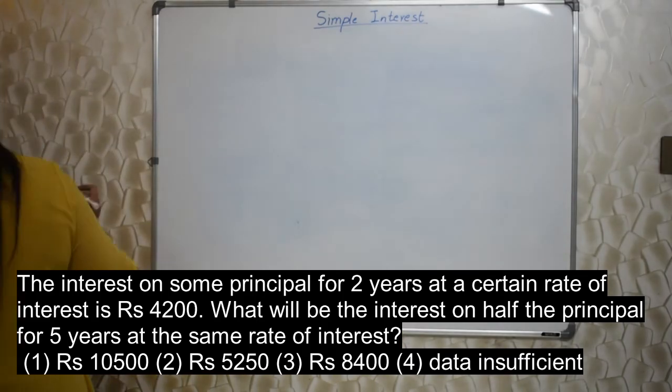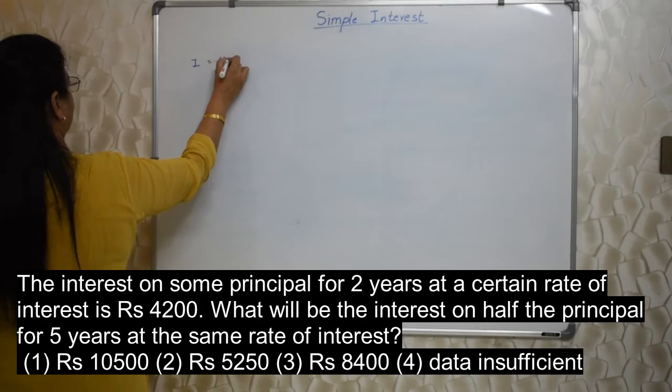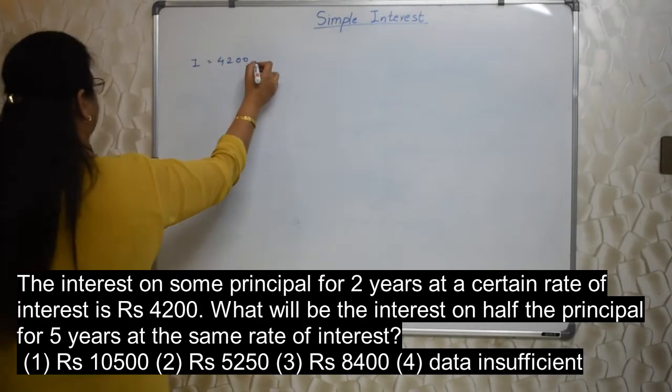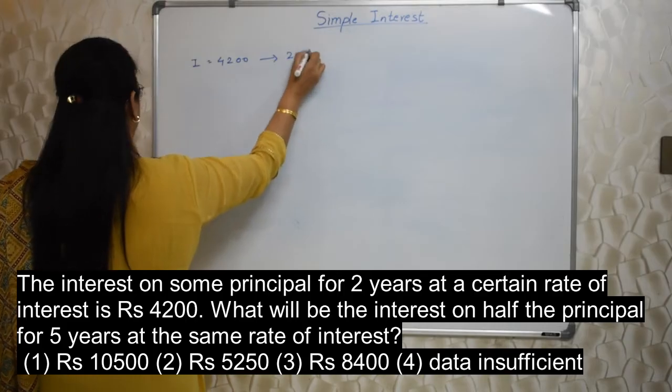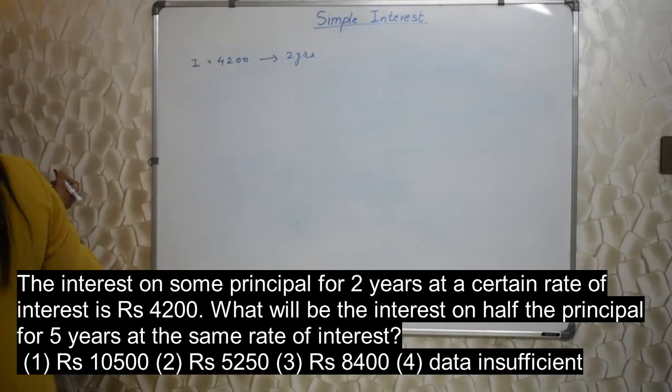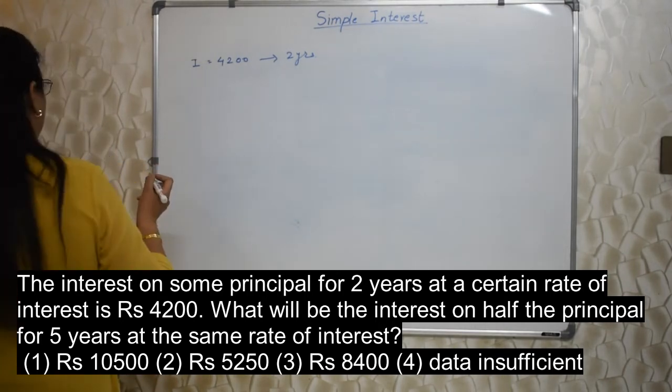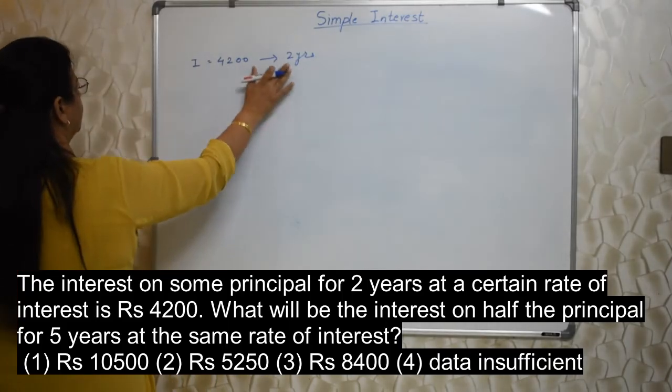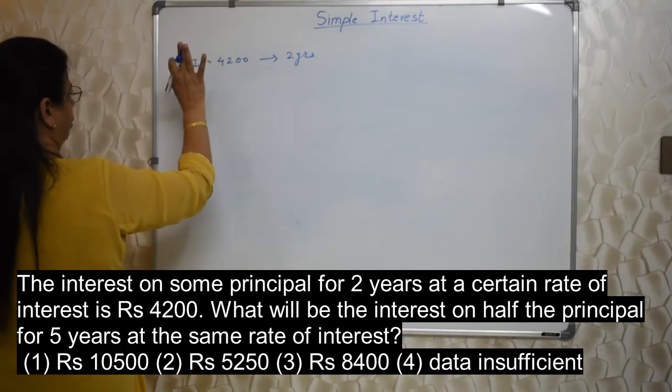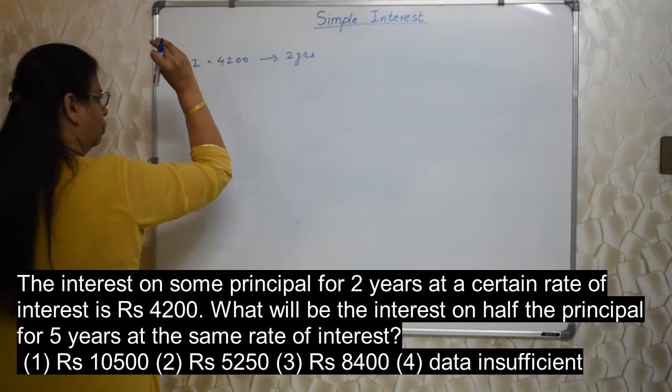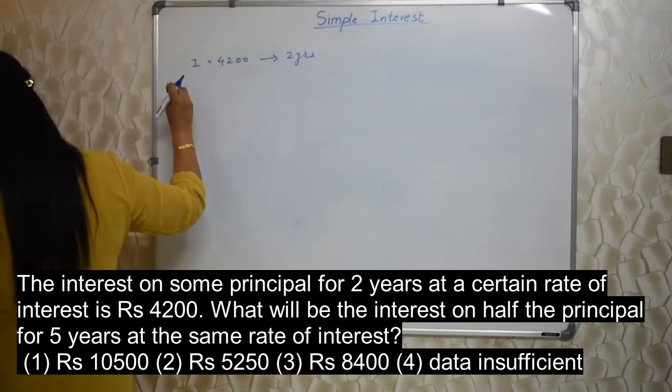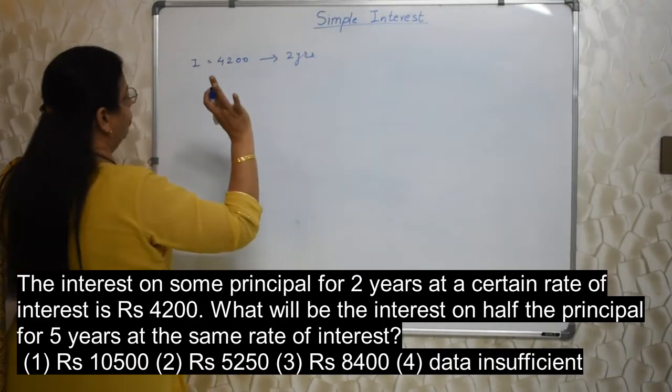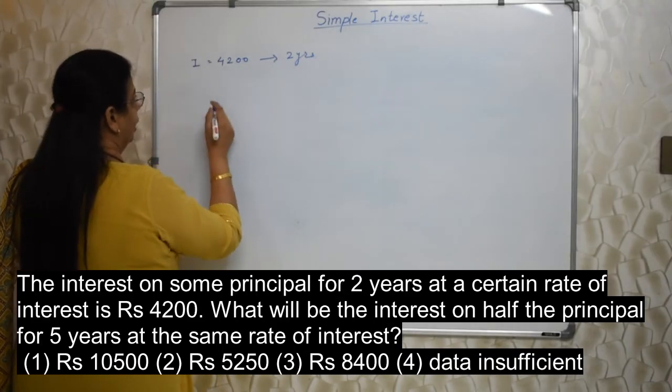Let's see how to solve this. What have they given you? Interest. Interest is Rs 4,200. This is for 2 years. Now they are asking, we don't know the principal. Still they are asking for half the principal for 5 years what will be the interest if the rate of interest is same. That also they have not mentioned. What is the rate of interest? Very minimum information is given to you. For 2 years interest is this much on certain principal. If we have the principal with the same rate of interest for 5 years what will be the interest? What to do? Unitary method. 2 years is given, 1 year we will find.